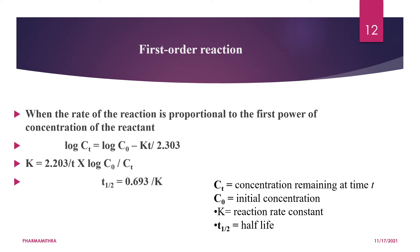For a first-order reaction, the rate depends on the concentration of only one reactant. It is sometimes referred to as a unimolecular reaction. A good example is the decomposition of hydrogen peroxide. Other examples include acid hydrolysis of ethyl acetate and methyl acetate, inversion of sugar, and biologically important processes like diffusion, absorption, distribution, and metabolism.